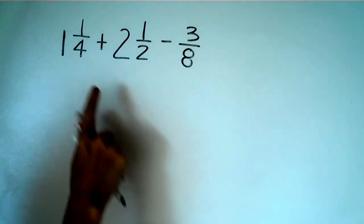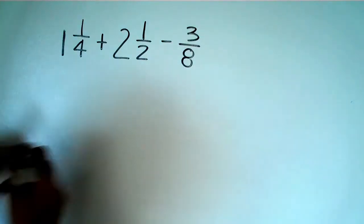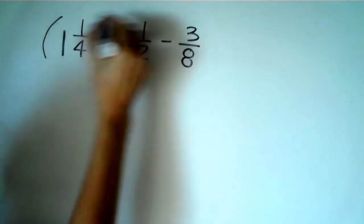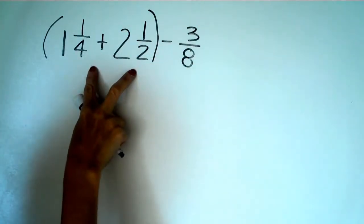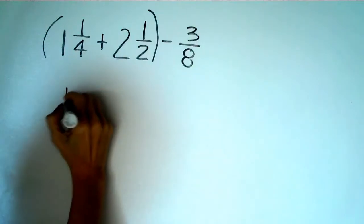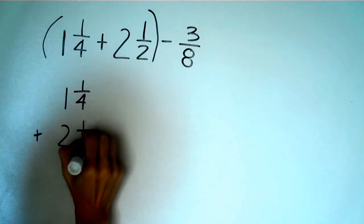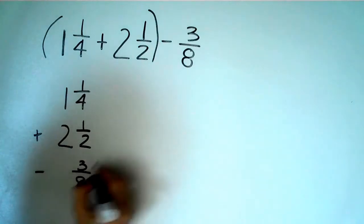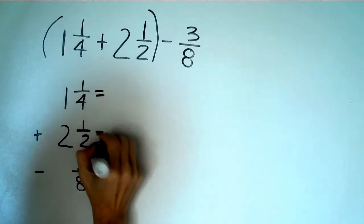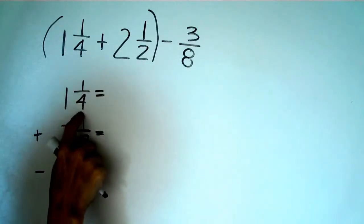In the next example I have three terms here. And we know with PEMDAS we have to take care of the first two terms. And in this case, these are mixed numbers. So what we're going to do is rewrite the whole thing vertically. One and one-fourth plus two and one-half minus three-eighths.